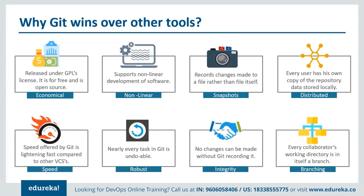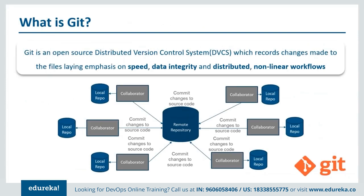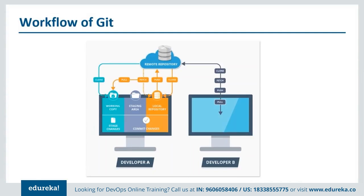Git is an open source distributed version control system which records changes made to files, laying emphasis on speed, data integrity, distributed and non-linear workflows. Now let's move on to the workflow of Git. The Git workflow is used to manage your project effectively — working with a set of guidelines increases consistency and productivity. Let's discuss each component in the Git workflow, starting with the remote repository.